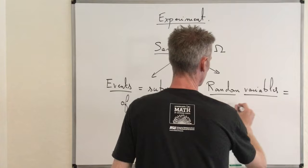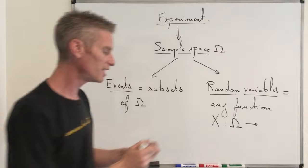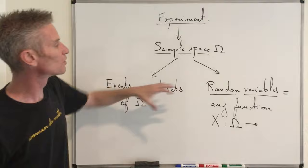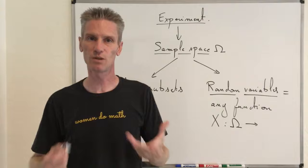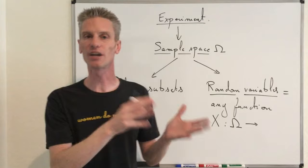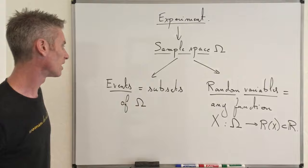A random variable is nothing less than a function, but this function is particular in the sense that it's defined on a sample space associated to an experiment. Typically we call them X, defined on the sample space Omega and valued in the range R(X). The range can be finite, infinite countable, or infinite uncountable — but in any case, the range is a subset of R.